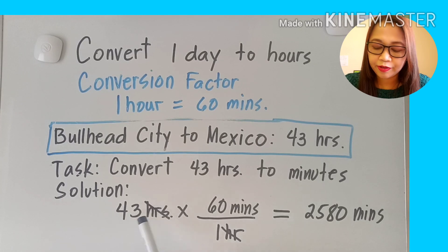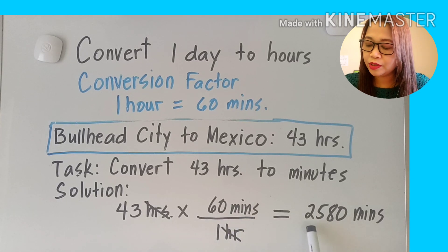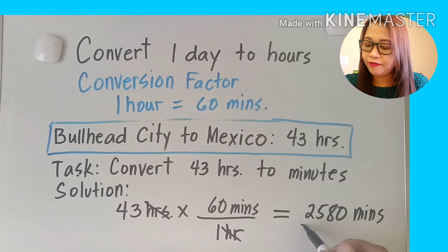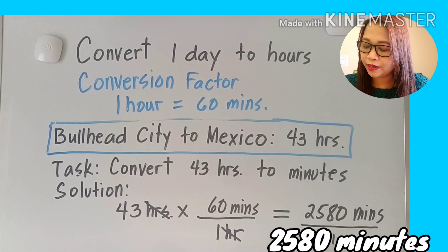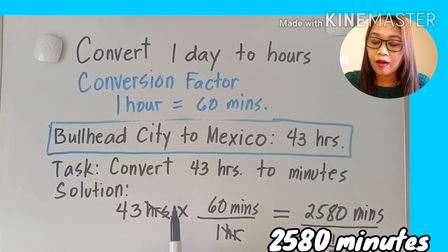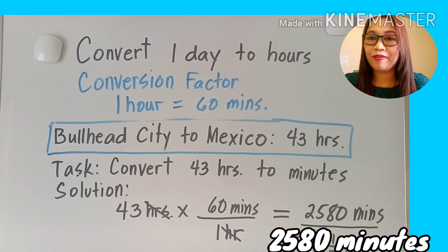Multiply 43 by 60 minutes, which equals 2,580 minutes divided by one, still equal to 2,580 minutes. So that means 43 hours is equal to 2,580 minutes.